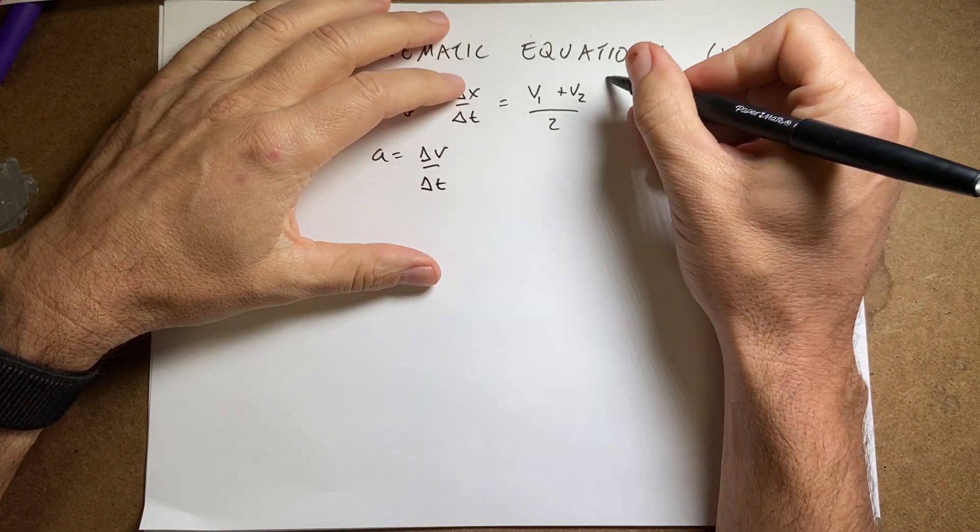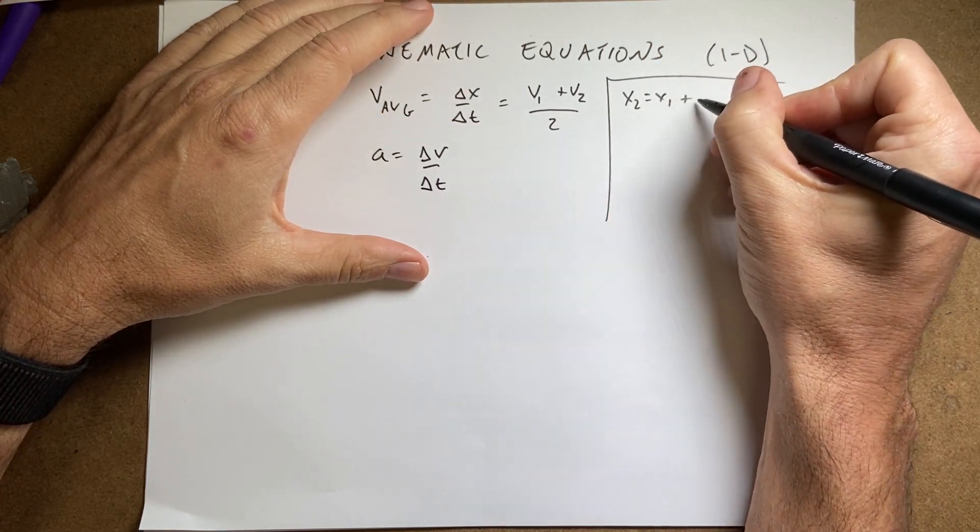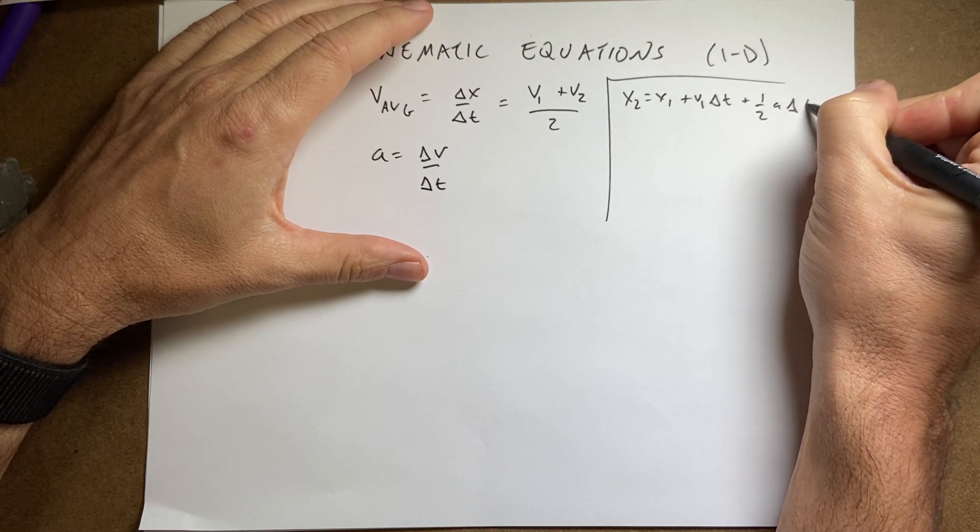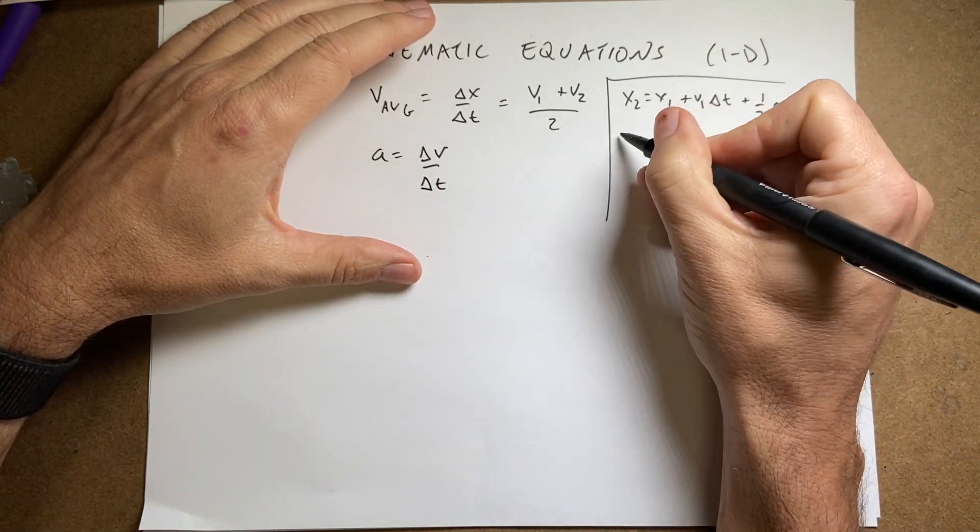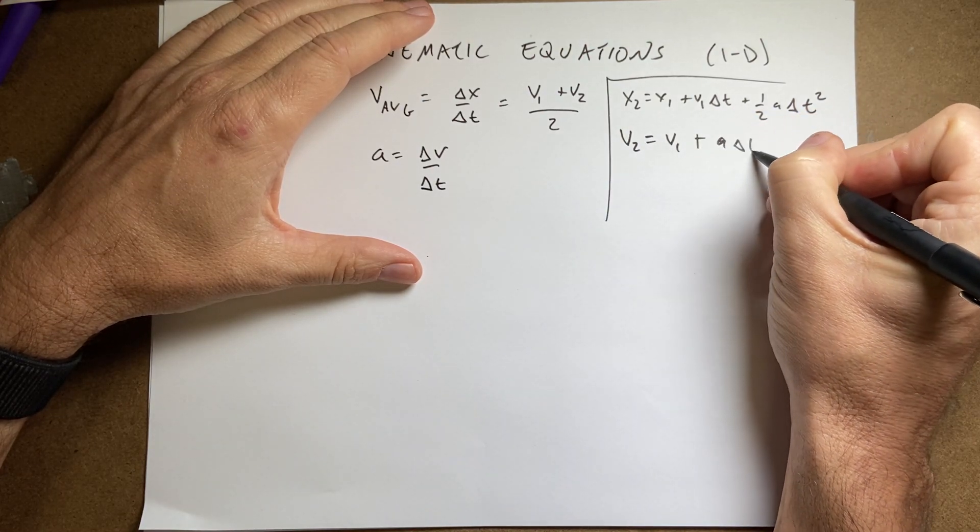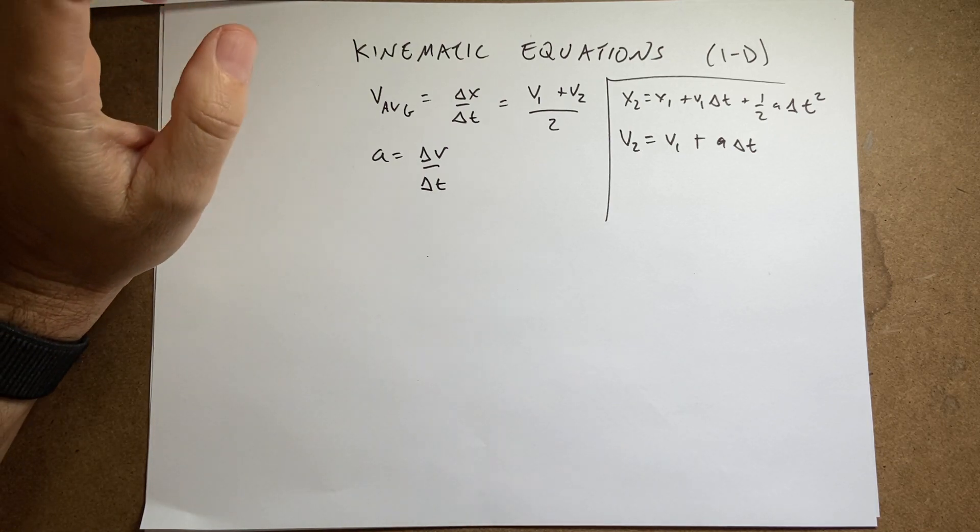I just mind-blanked on deriving one of these kinematic equations. So far we have, in the past video, I have this kinematic equation. x2 equals x1 plus v1 delta t plus 1 half a delta t squared. I derived that. v2 equals v1 plus a delta t. I derived that. And then the third one I kind of mind-blanked on, but I got it. I got it now.